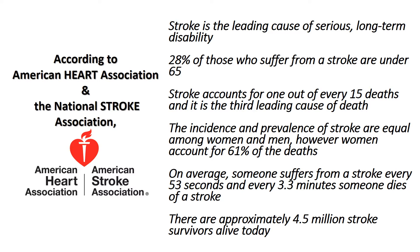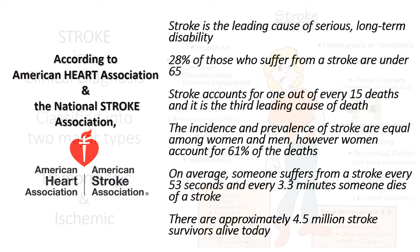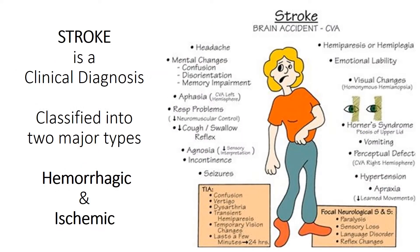There are approximately 4.5 million stroke survivors alive today. Stroke is a clinical diagnosis. Strokes are classified into two major types: hemorrhagic and ischemic.